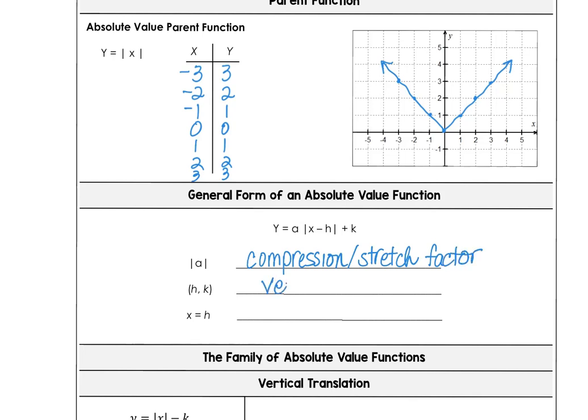h and k are our vertex coordinates, and x equals h is the axis of symmetry. That's the imaginary line that splits the graph in half so that the right half and the left half are identical to each other in opposite directions.